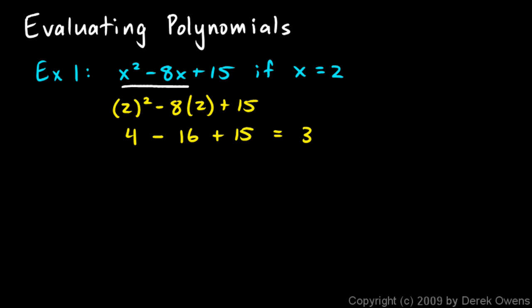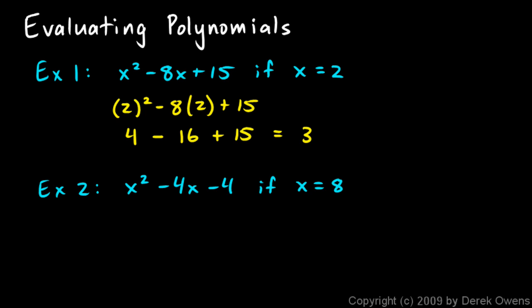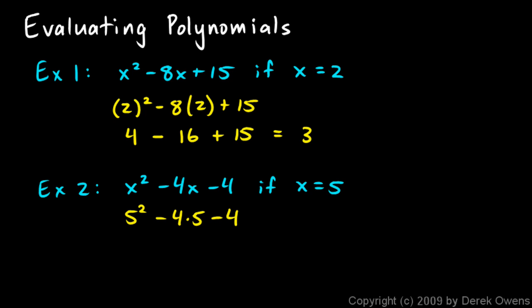So 3 is the value of this polynomial if x is 2. Example 2: evaluate x squared minus 4x minus 4 if x equals 5. Just like before, we rewrite this polynomial but in place of x we put in 5. So we have 5 squared minus 4 times 5 minus 4. 5 squared is 25, minus 4 times 5 which is 20, minus 4, and that works out to 1.